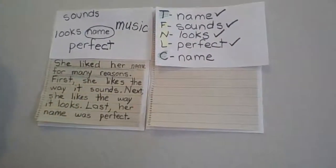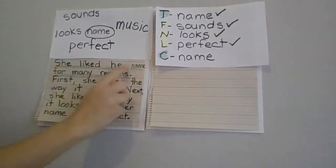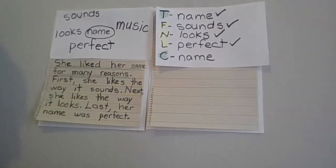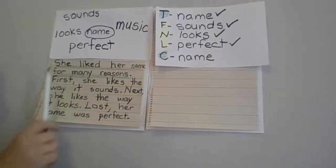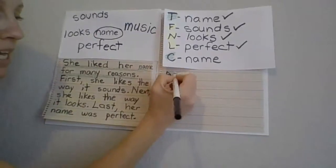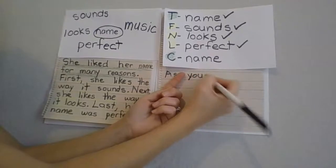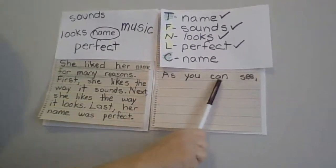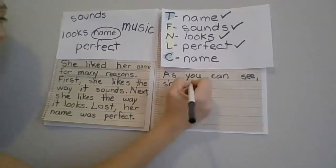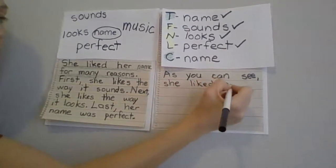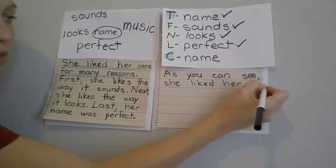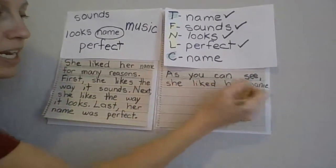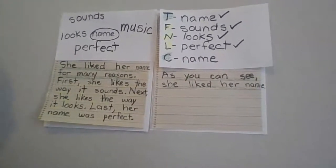All I'm missing now is a closing sentence. Our closing sentence will look a lot like our topic. Our topic was 'she liked her name for many reasons.' We use a transition word. As you can see, she liked her name. We use green to match our topic.